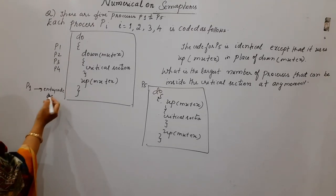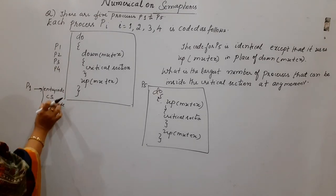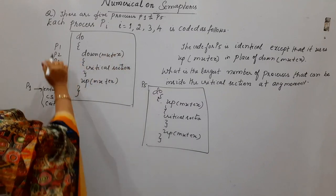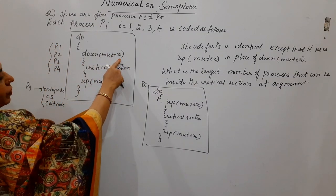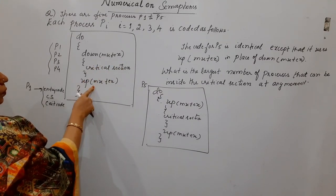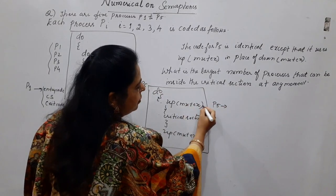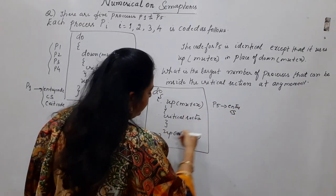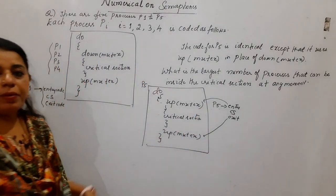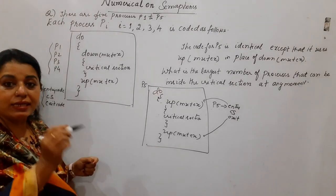Only if the entry code allows it can the process enter into the critical section. Once it comes out, it has to perform its exit code. These are the three different sections of each process. For P1 to P4, the entry code is the down operation on mutex; then they enter the critical section; and at the time of leaving, they perform the up on mutex. But P5 is doing it differently — for P5, the entry part is up on mutex, then the critical section, and the exit section is also up on mutex.